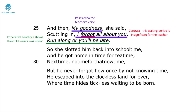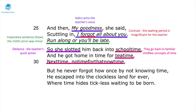The imperative 'run along or you'll be late' again shows just how minor the child's error was. The sibilance in 'she slotted him back into school time' shows the teacher's quick action. He then goes for tea time, next time, no time for that now — the child returns to familiar, childlike, concrete understandings of time. In the final stanza, 'he never forgot' — in contrast to the teacher's 'forgot' — shows just how significant this detention was from the child's perspective: the sense of abandonment and sheer terror of not knowing how long they'd be there.